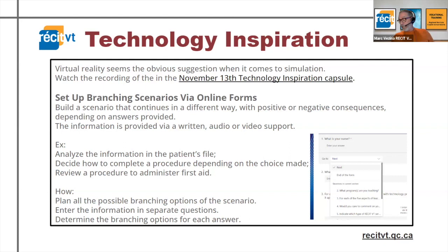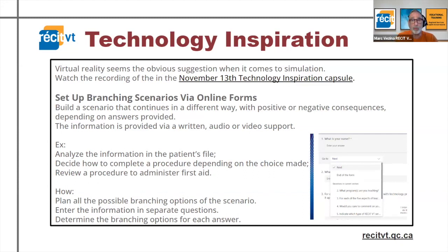Simulation does not require high tech — it needs to be rooted in a sound and solid learning objective. In this segment of the Vogue Talk Café, I always bring up a technology tool idea you can use in your lessons. I'm going to propose setting up branching scenarios using forms — Google Forms for Lester B schools, Microsoft Forms for most other school boards. The idea is to build a scenario that continues in different ways with positive or negative consequences depending on the answers provided by the learner. Information can be put in text, audio recordings with or without sound effects, or video recordings.